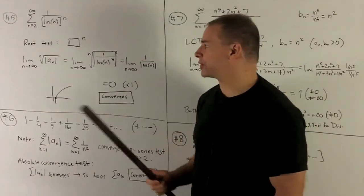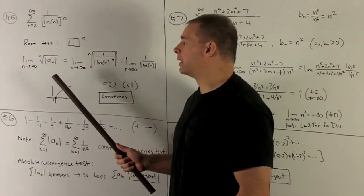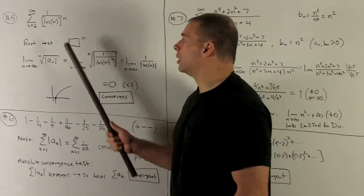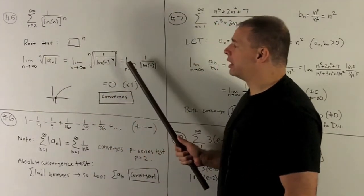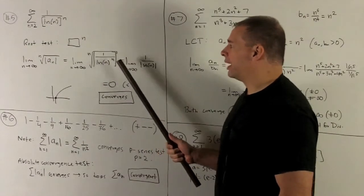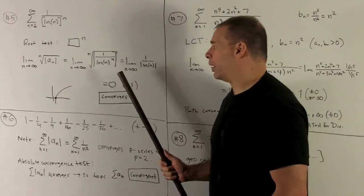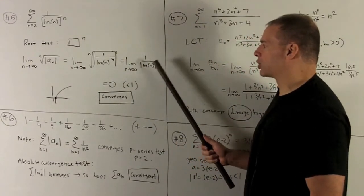So to use the root test, we start with this gadget here. Take the limit of n going to infinity, the nth root of the absolute value of a sub n. We're going to stick our a sub n into here. That gives me this, and you'll note the nth root and the n to a power are going to cancel each other out, just leaving me with limit n going to infinity of one over absolute value of natural log of n.